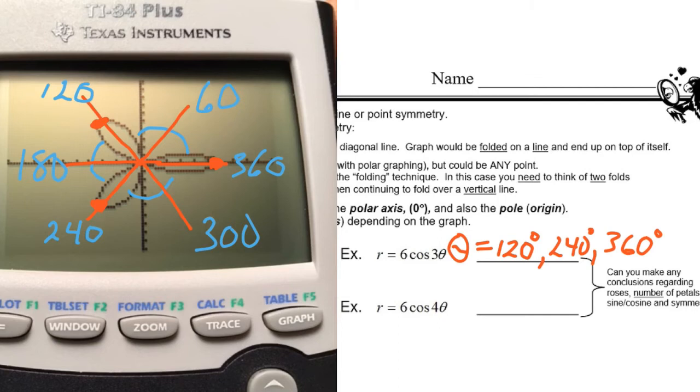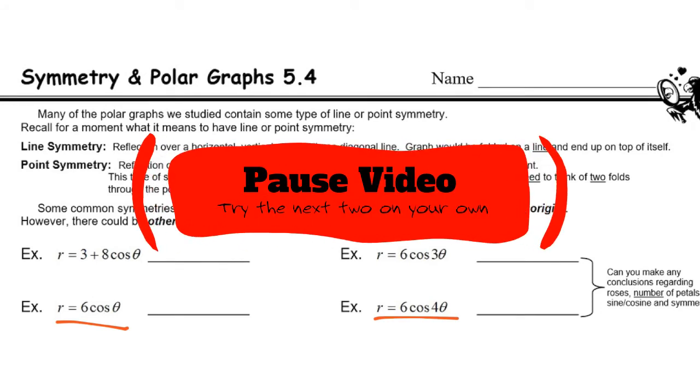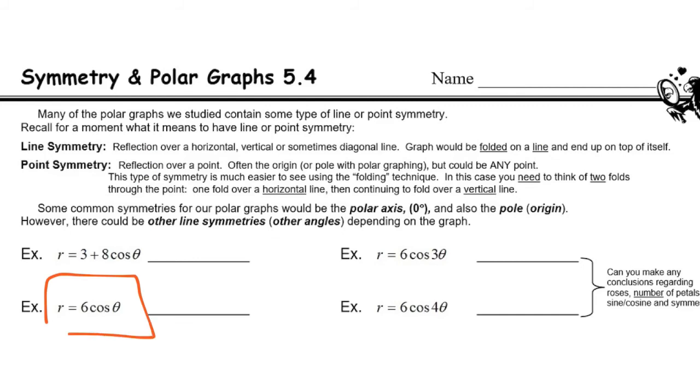Why don't you take a look at the next two on your own. This would be a good time in the lesson to pause the video and try these. Try graphing 6 cosine and 6 cosine of 4 theta and see what these look like. And then come back and we'll go over them. 6 cosine of theta. Did you make a prediction about what that would be? Do you know that that's going to end up being a circle? You're going to have to know that for the test. It looks like when you graph it on your calculator, you do get a perfect circle.